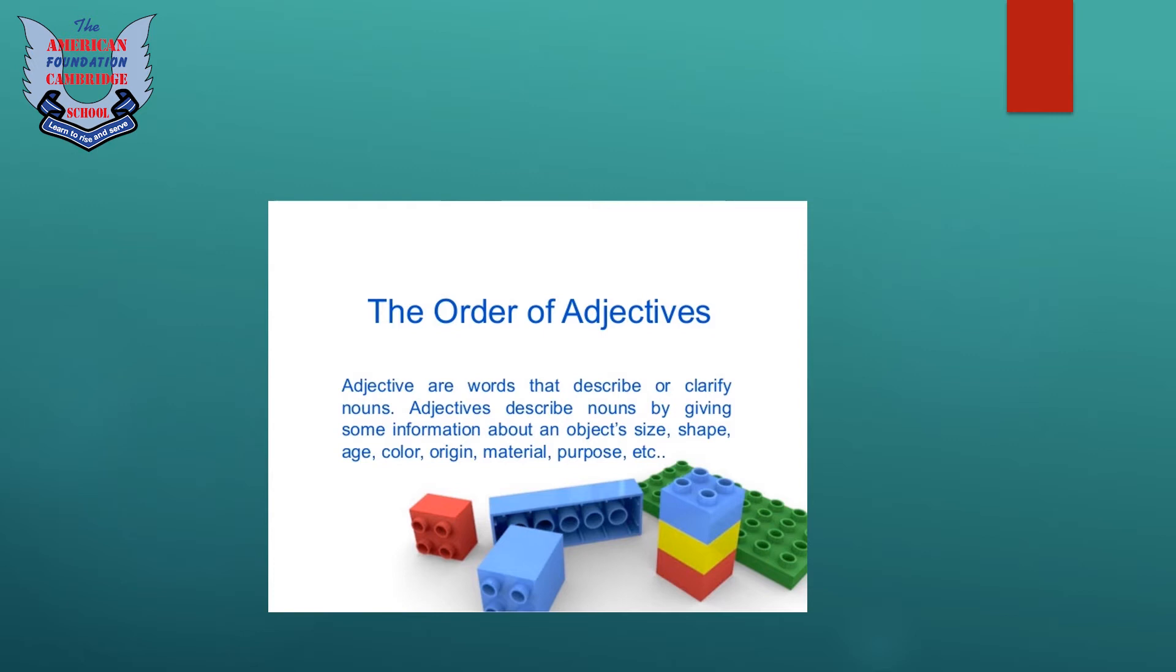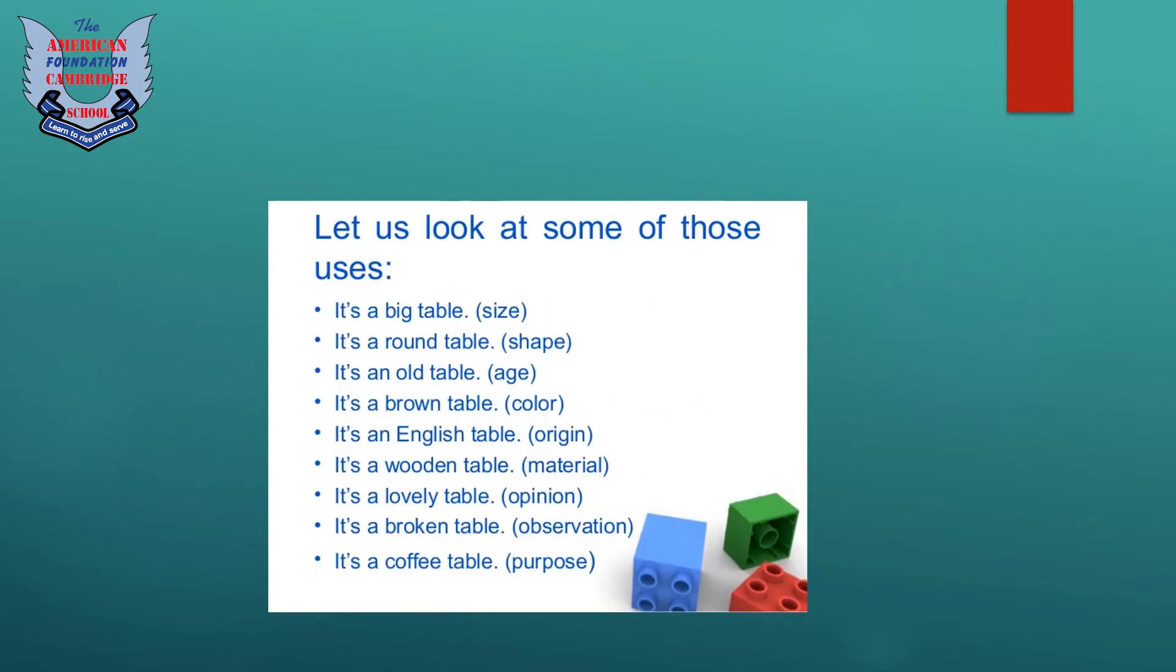Let us look at some of these uses. If we are talking about the size of an object, it's a big table. If you're talking about a noun's shape, it's a round table. If you're talking about a noun's age, it's an old table. If you're talking about color, it's a brown table. If you're talking about origin, it's an English table. If you're talking about material, it's a wooden table. Opinion: it's a lovely table. Observation: it's a broken table. Purpose: it's a coffee table.